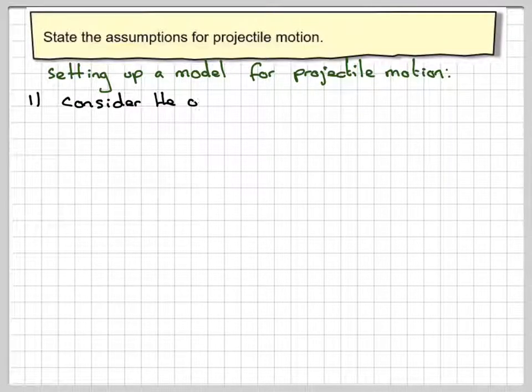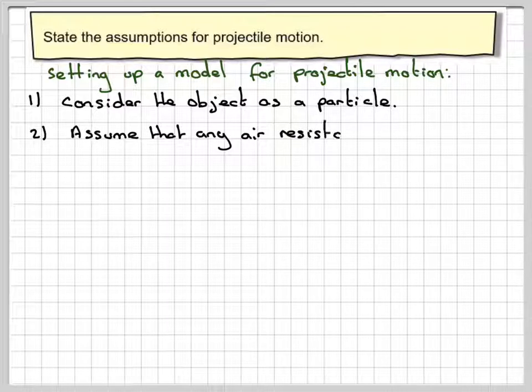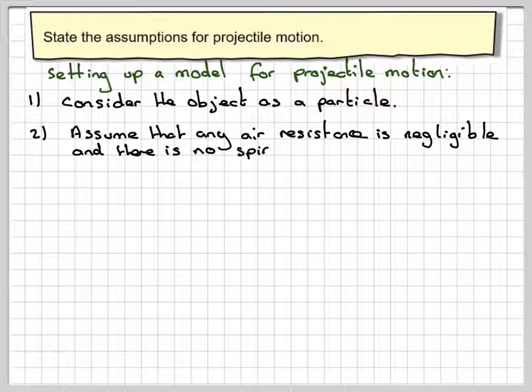1. Consider the object as a particle. 2. Assume that any air resistance is negligible and there is no spin.